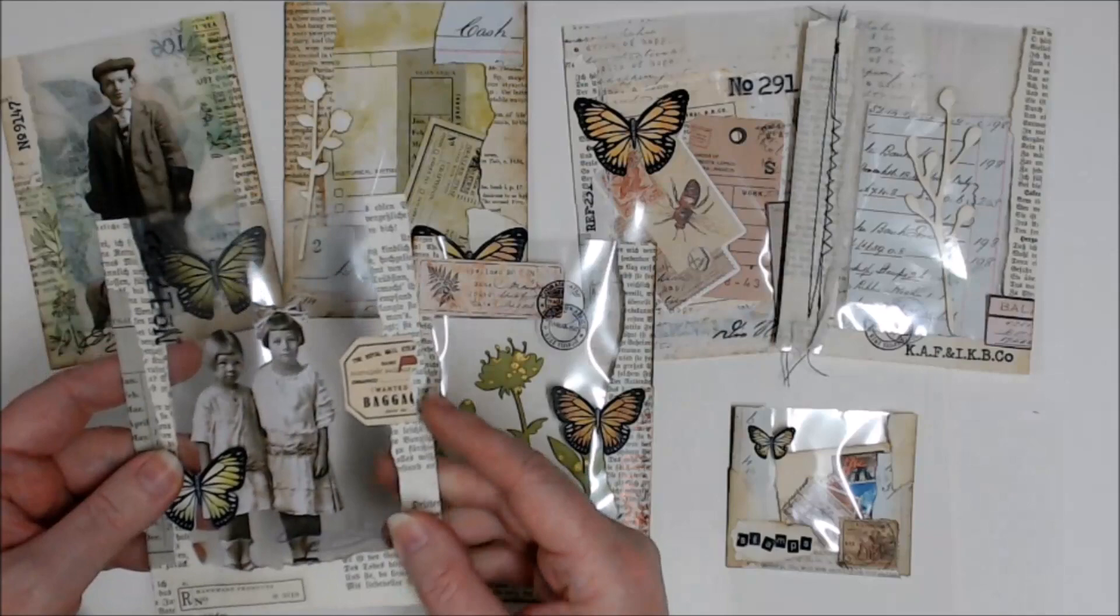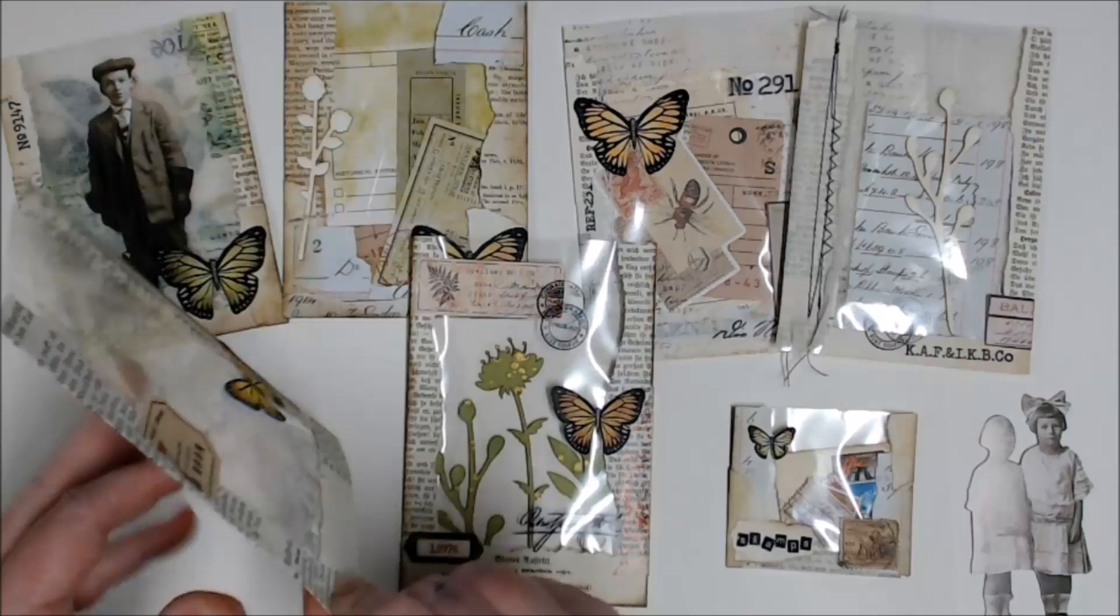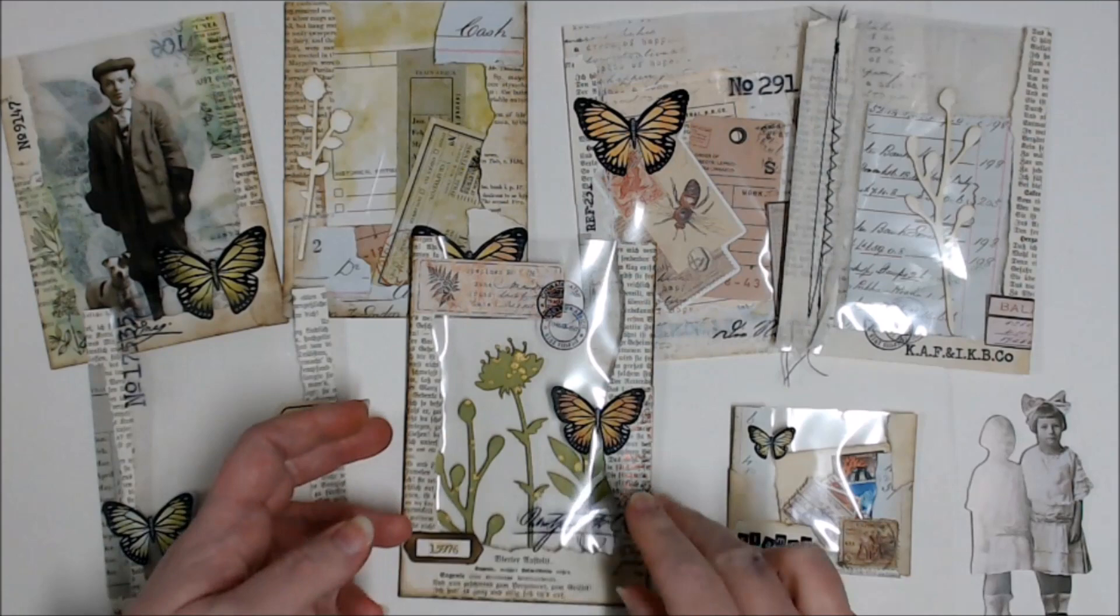I've been creating these clear pockets out of recycled cellophane bags and book page scraps and a few embellishments from my stash. So this one I have just put in a couple of the Tim Holtz dolls and you can see it's completely clear and I've actually made this one double sided.